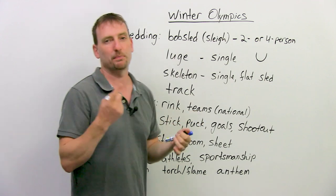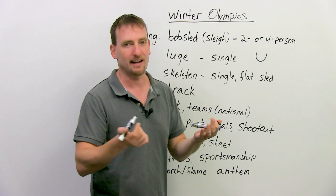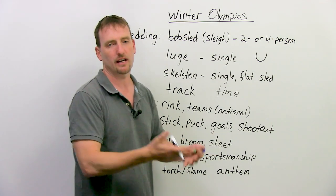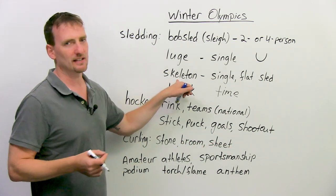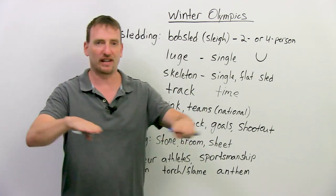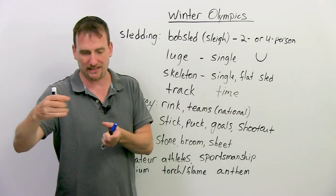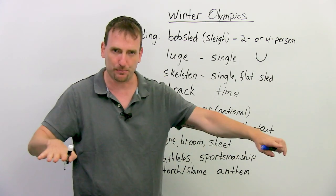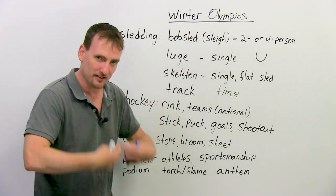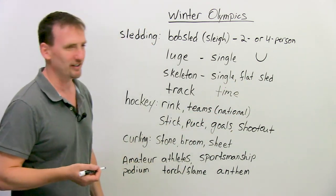Then there's the luge, which is one person on a shorter sled, and they compete by time — whoever has the best time down the track is the winner. All of the sledding events are about time. As for skeleton, the people who do it are a little bit crazy, because it's basically a flat sled — just a board on blades. They run, put it down, jump on, and lie flat on their stomachs head first going down the track. Whoever has the best time wins. Super dangerous, but very exciting to watch.